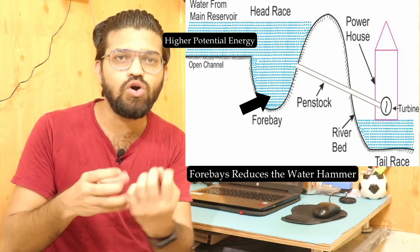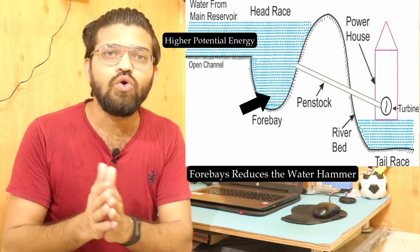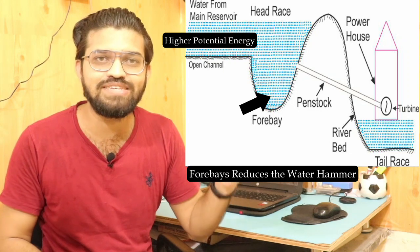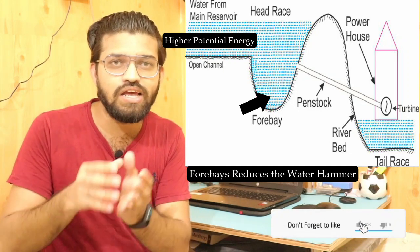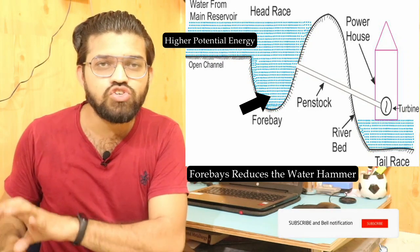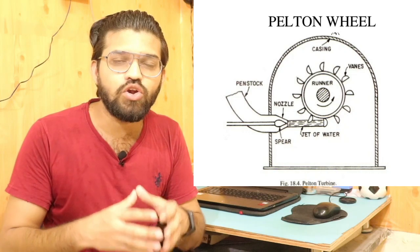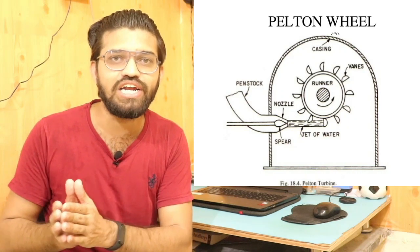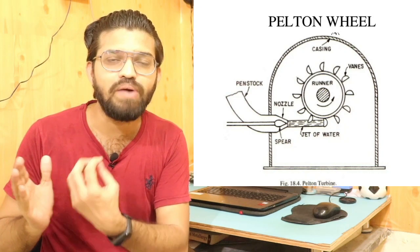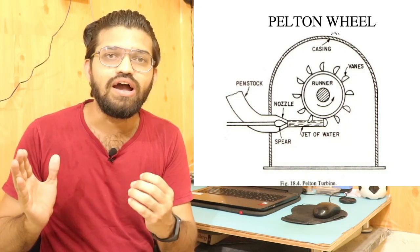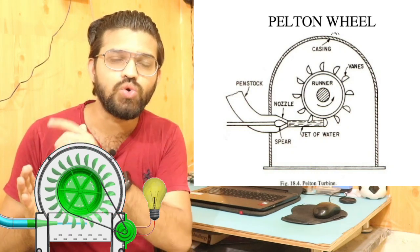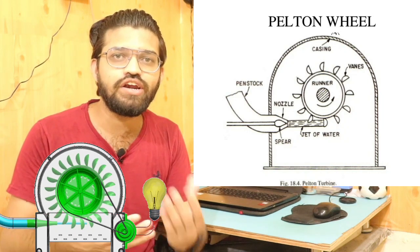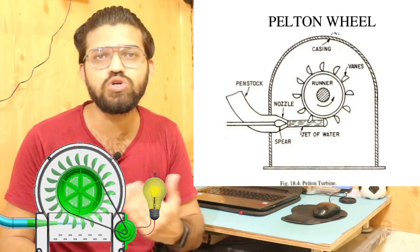The water flows through the forebays, across the tunnels, via the penstock. The penstock is the slanting slope as you can see in this image. At the end of the penstock there is a nozzle. Via this nozzle, the water comes out with higher velocity and higher pressure, and it will ultimately hit the bucket of the Pelton wheel. This imparts a force on the Pelton wheel, tries to rotate it, tries to rotate the blades of the turbine, and ultimately the shaft of the generator also rotates, producing electricity.